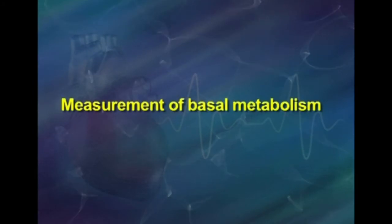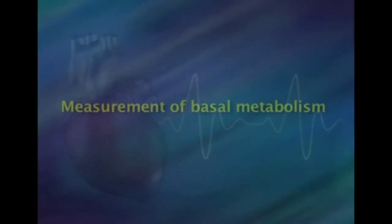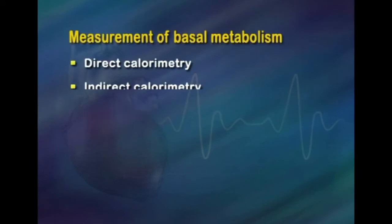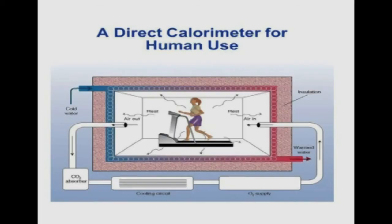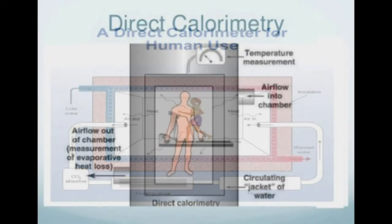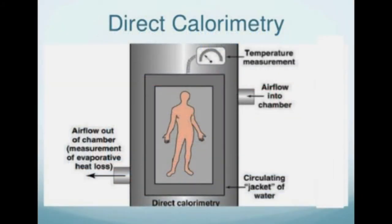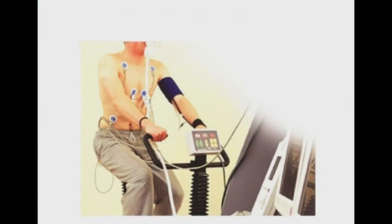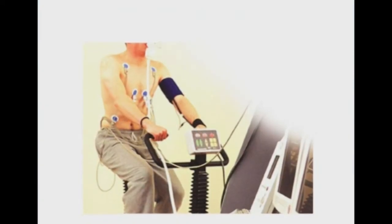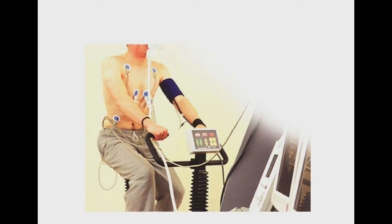One disadvantage of direct calorimetry is that measurements can only be made over periods of several hours or more, since the technique assumes there is no net increase or decrease in body temperature over the measurement period. Indirect calorimetry is based on the fact that oxygen used and carbon dioxide produced are in proportion to the heat generated. BMR is measured by indirect calorimetry under specific conditions.